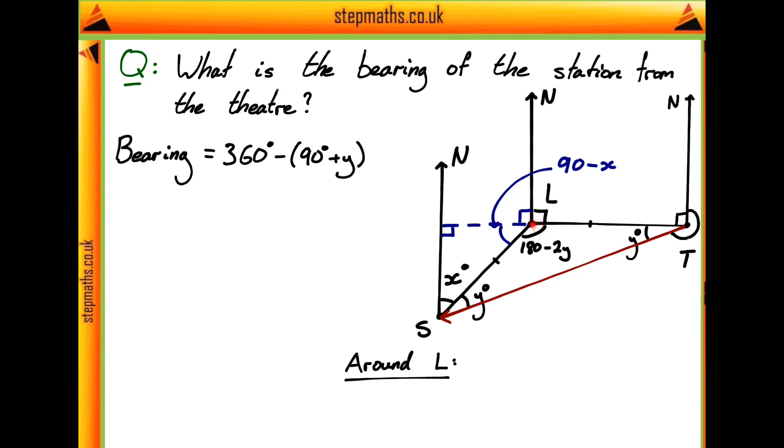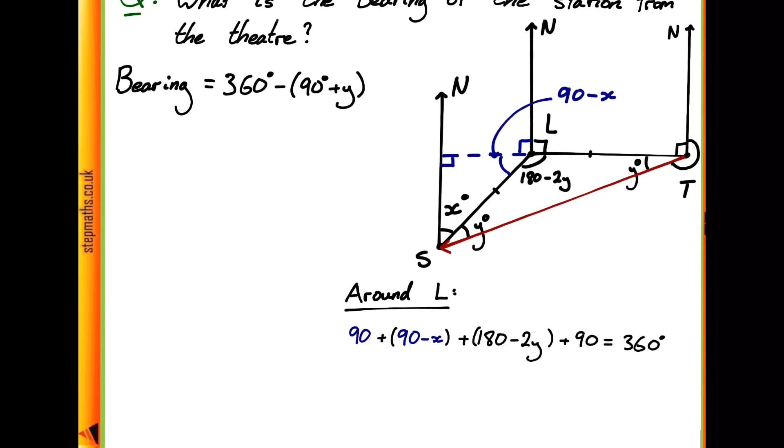So looking around L we can use exactly the same factors we did around T that all of the angles add up to 360 degrees together. So we can have our 90 degrees up here in our diagram plus our 90 minus x angle plus our 180 minus 2y angle plus our extra 90 degrees and that's all together going to equal 360 degrees. So if we collect together all the terms on the left hand side then this becomes the simpler expression 450 minus x minus 2y equals 360 degrees.